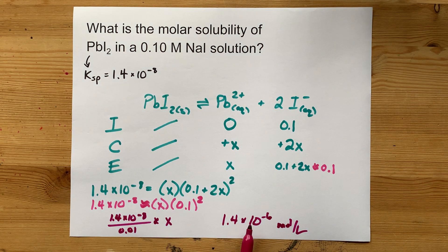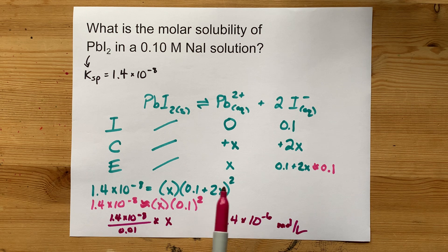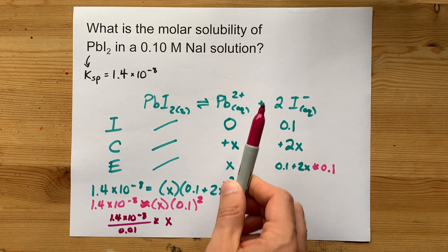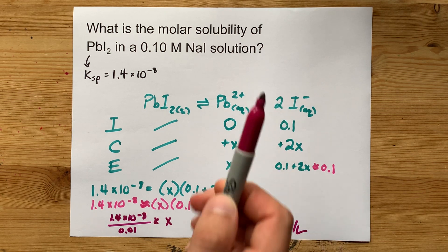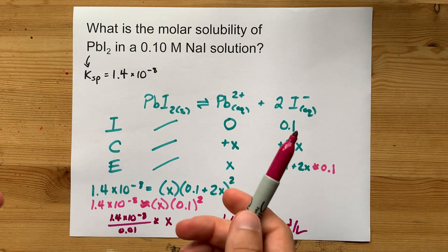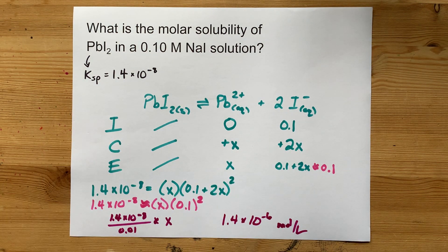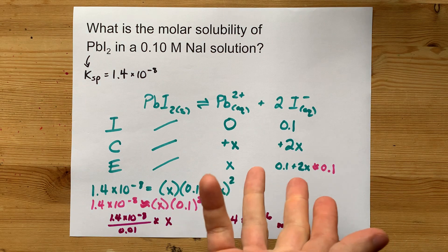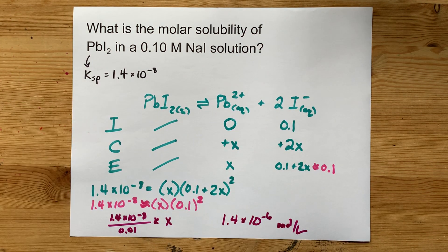This is less than would have dissolved if you were doing it in pure water because you already had some iodide in solution. That's called the common ion effect, and it's probably what your teacher is trying to get at when they give you this question.